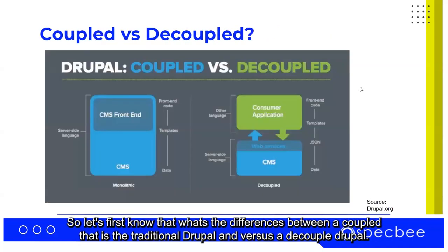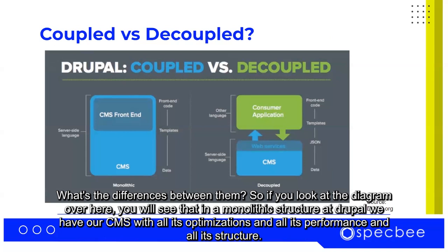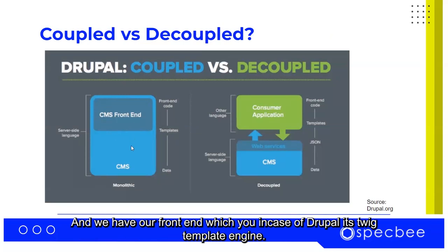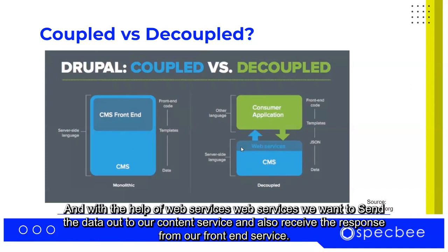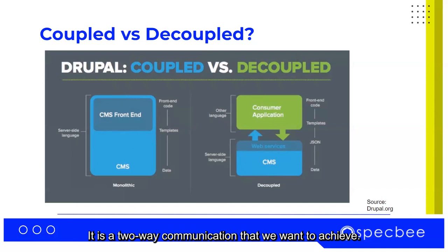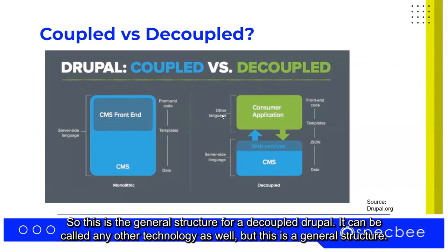Let's first look at the differences between coupled — that is the traditional Drupal — versus the decoupled Drupal. In a monolithic structure like Drupal, we have our CMS with all its optimizations and performance and structure, and we have our frontend which, in case of Drupal, is Twig, the template engine. That's how we render our frontend. But in case of decoupled Drupal, we want to utilize all the functionality of our CMS and, with the help of web services, send the data out to our frontend service and receive the response from our frontend service. It is a two-way communication. This is the general structure for decoupled Drupal — it can apply to any other technology as well.